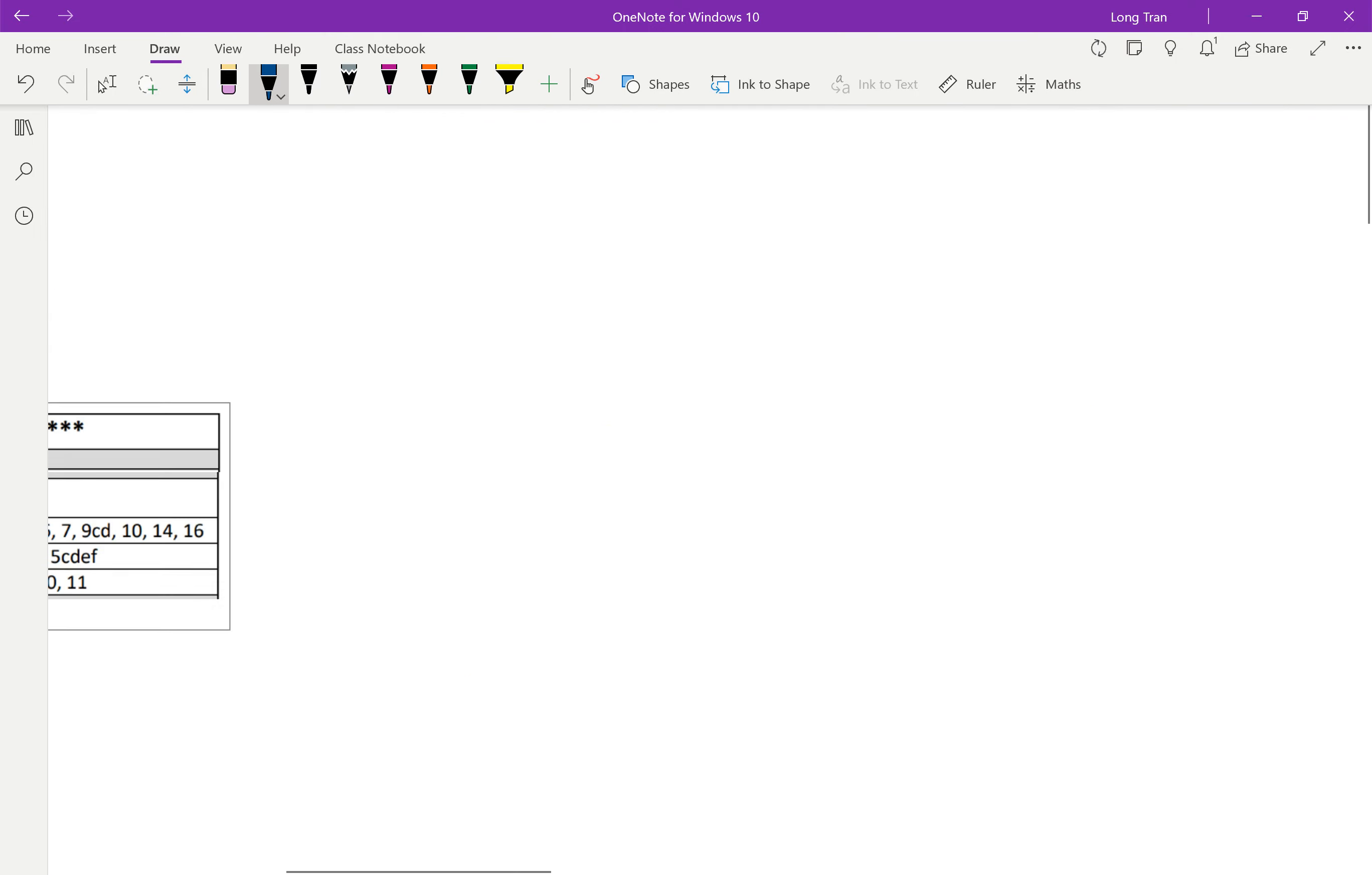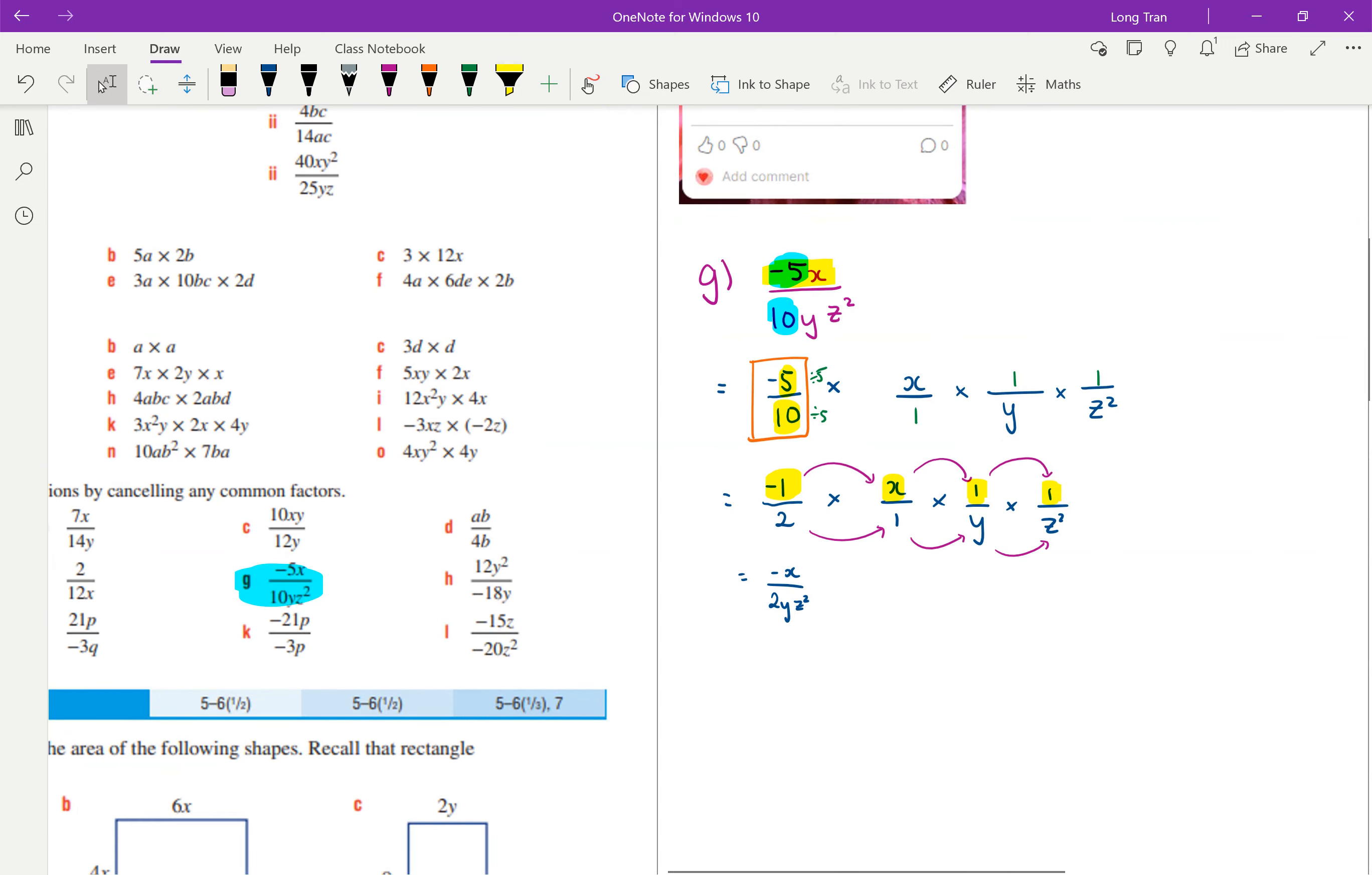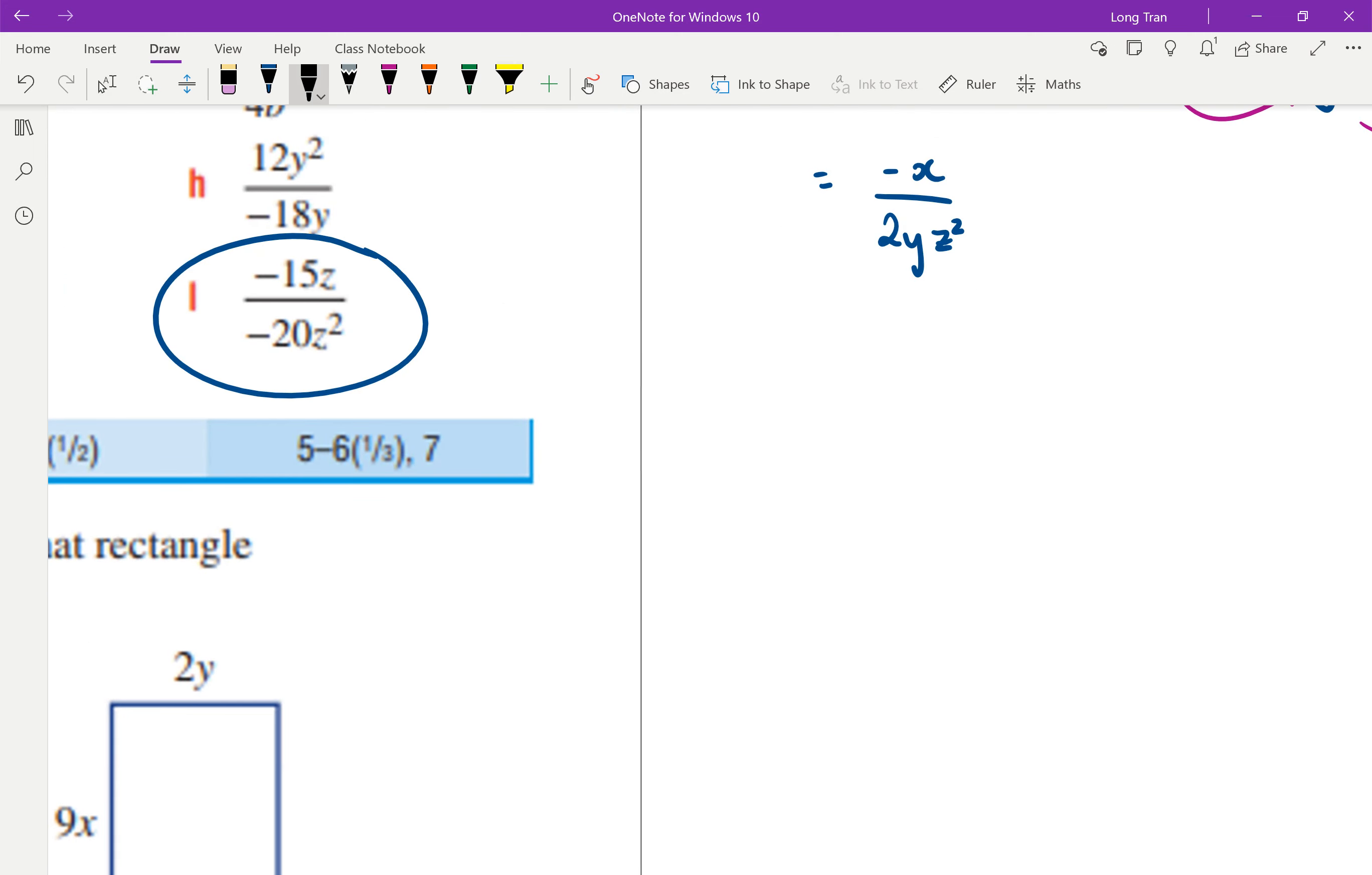So, that is how you would do the fractions with negatives. Later on, you don't have to expand it out the way I have. You can just focus on the numbers, but I like to break it apart to make it easier for students to see. So, if I pick another one, let's say l, let's do l together.